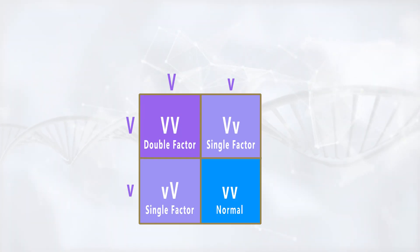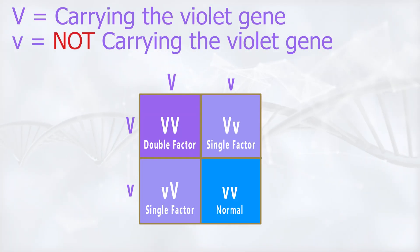Now back to violet, we use a capital V to indicate a bird that carries the violet gene, and a lowercase v for one that doesn't. Basically, there are two versions.